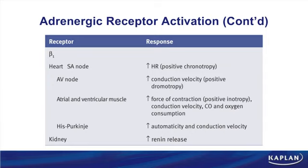Beta-1 receptors are also found in the kidney, on JGA cells, where stimulating them causes renin release. If a question asked for a drug that would specifically inhibit sympathetic-induced renin release, you need to understand that the sympathetic nervous system causes renin release through beta-1 activation. To stop that, you block beta-1s — you're looking for a beta-1 blocker.